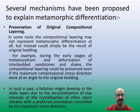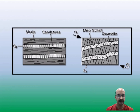The first mechanism is preservation of original compositional layering. As we find in sedimentary terrains, there are sandstone and shale layers alternating each other. When they are subjected to metamorphism and deformation, the compositional layering is preserved during the recrystallization of minerals. We observe these compositional layers — alternate layers of shale and sandstone — give rise to alternate layers of mica schist and quartzite.